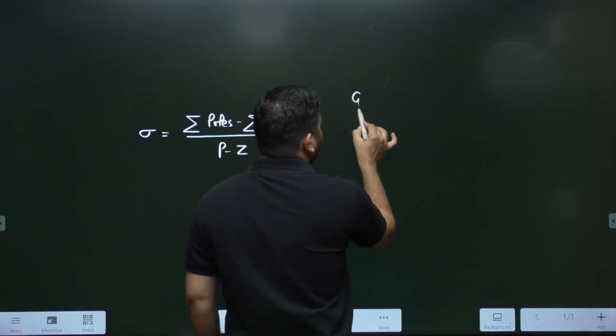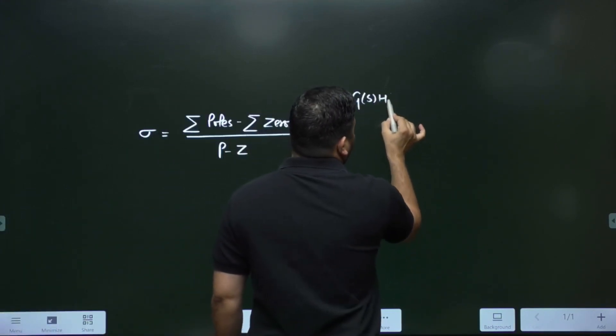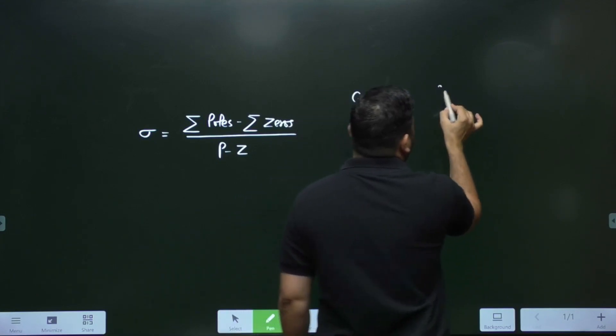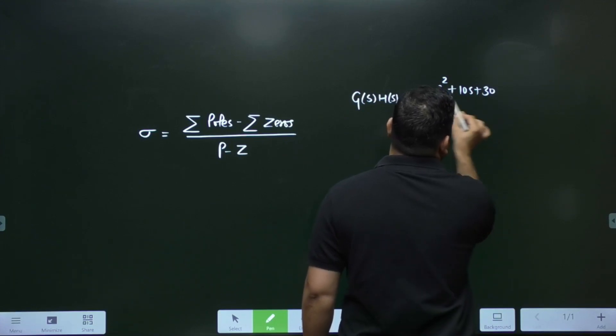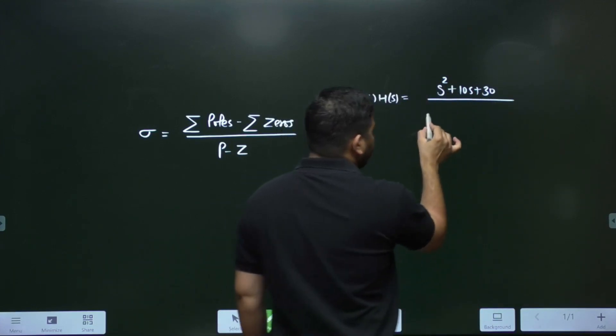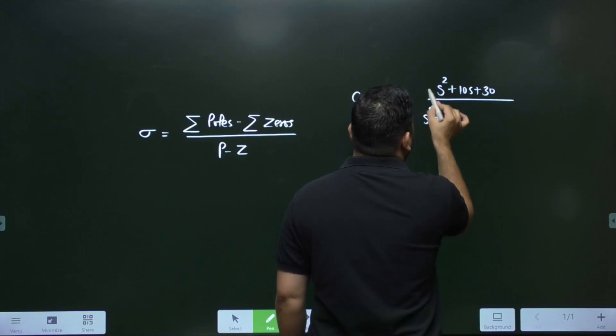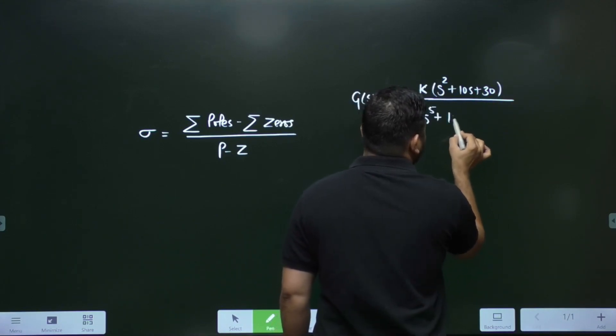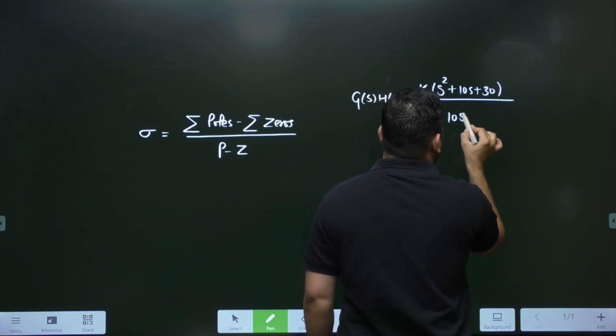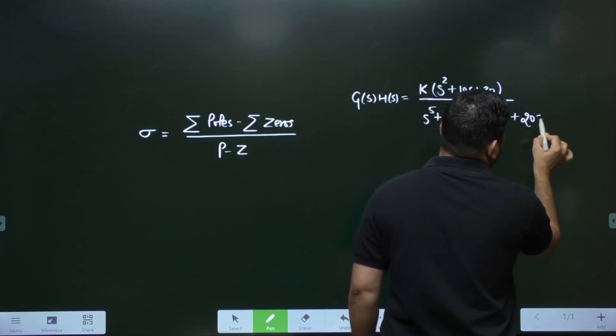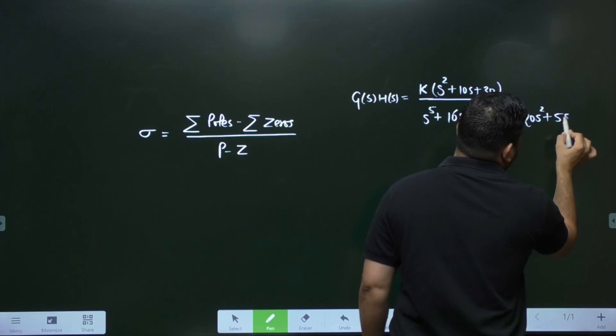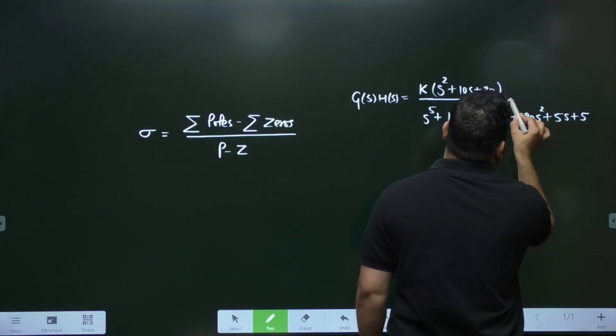Let us say G(s)H(s) is given to you. G(s)H(s) is given as s² + 10s + 30 divided by K into s⁵ + 16s⁴ + 10s³ + 20s² + 5s + 5. Let us say it is given to you.